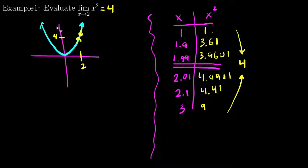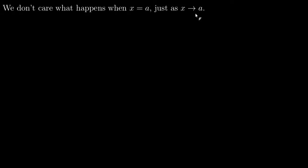Either way works. The table can be nice for tough decimal numbers, while for X squared you can just look at the graph and see it. A possible pitfall: notice I never put in X equals 2 in my table. That's a shortcut I can sometimes use, but I don't actually care what happens at X equals A.